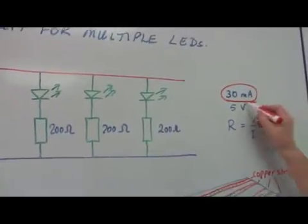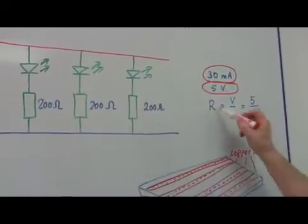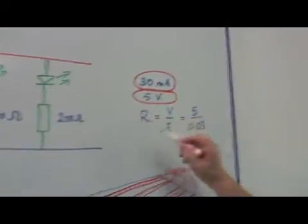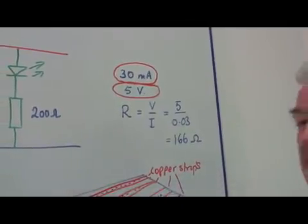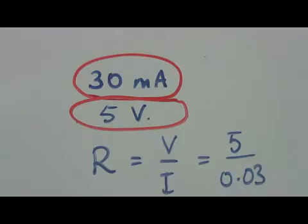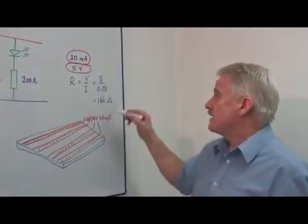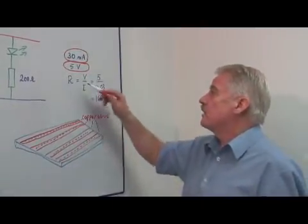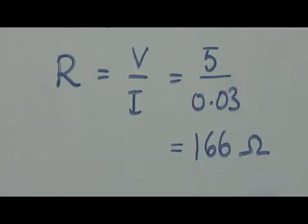Therefore, if we have a 5 volt supply, we have to work out the resistance we require to limit that current, because the light emitting diode has very little resistance itself. If you connected the wrong way around, it has almost an infinite resistance. But connected the correct way around, it has virtually no resistance, and therefore we have to work out the rough resistance, about 166 ohms.